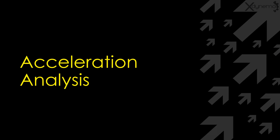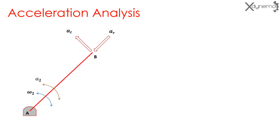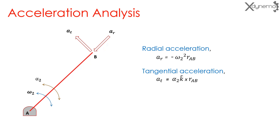Now we will discuss acceleration analysis. Consider a link AB rotating with angular velocity omega 2 and angular acceleration alpha 2. For a rotating link, there are two components of acceleration. The radial component acts along the link toward the center of rotation: radial acceleration equals omega 2 squared times RAB. The tangential acceleration acts perpendicular to the link in the direction of angular acceleration alpha, and equals the cross product of alpha 2 and RAB. The acceleration of point B is the vector sum of radial and tangential accelerations: alpha 2 times K cross RAB minus omega 2 squared RAB.